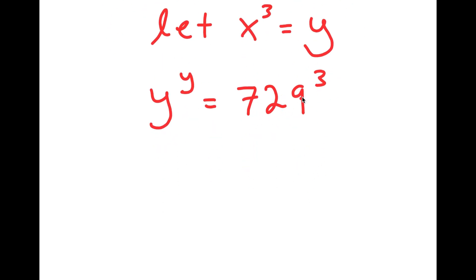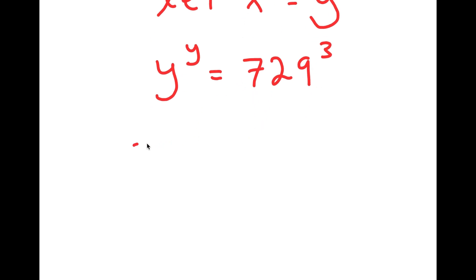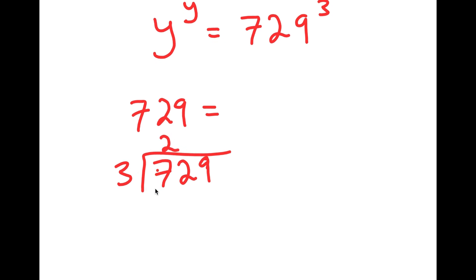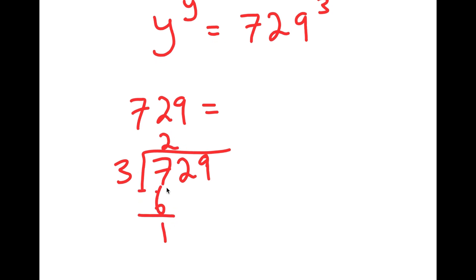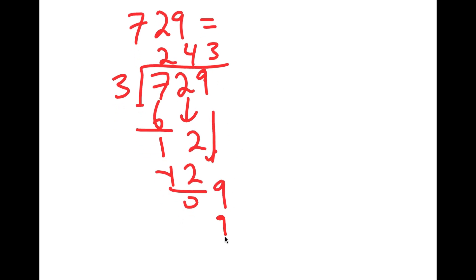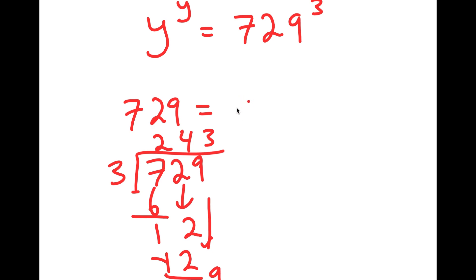Now I can simplify 729 to the power of 3. So 729 — let's find some factors of this. Let's try to divide by 3. 729 divided by 3: we get 6, subtract 7 with 6 we get 1, bring that to 2, 3 times 4 is 12, bring that to 9, 3 times 3 is 9. So I get 729 is equal to 243 times 3.